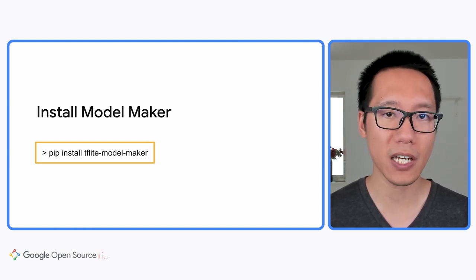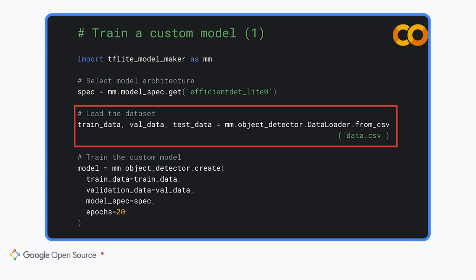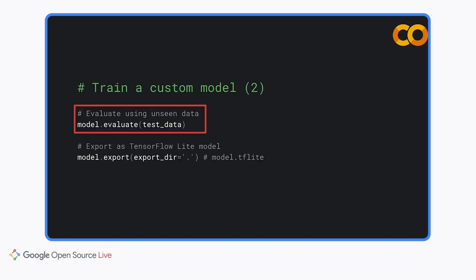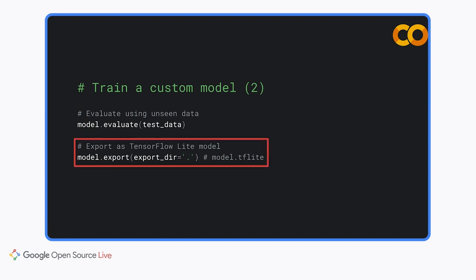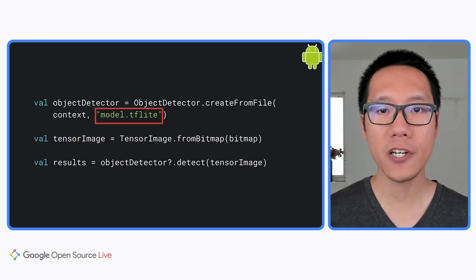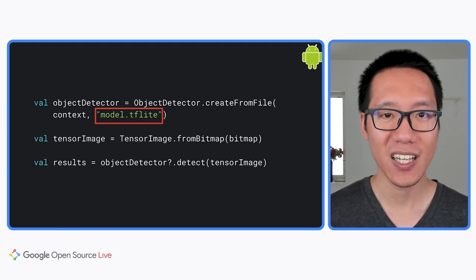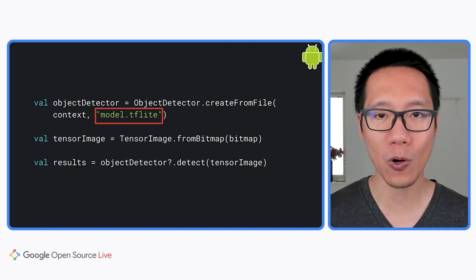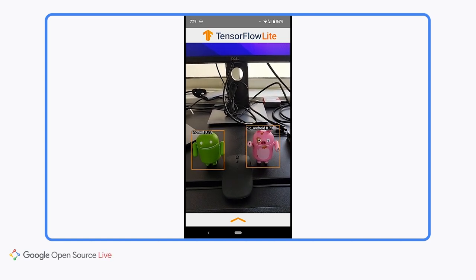Here's the Python code to train a custom model using Model Maker. You start by choosing the model spec or model architecture — here we use EfficientDet Lite0, the same architecture as the pre-trained model we downloaded from TensorFlow Hub. Then you load your dataset using the object detector data loader, and start training your model. After training, you use a test dataset to evaluate model accuracy. And finally, you export the model to deploy on edge devices. Once training is finished, you switch to the Android app and deploy it by reusing the demo app code and replacing the pre-trained model with your custom model.